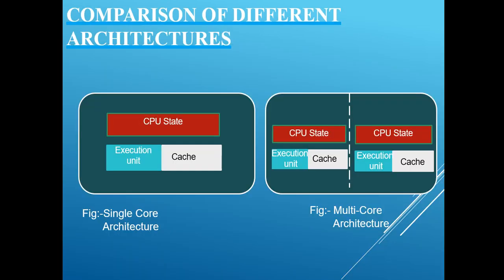This is a comparison between multi-core and single-core architecture. From these two types of cores we can see that the execution unit and cache in the single core consist of one unit, while multi-core has two of them.